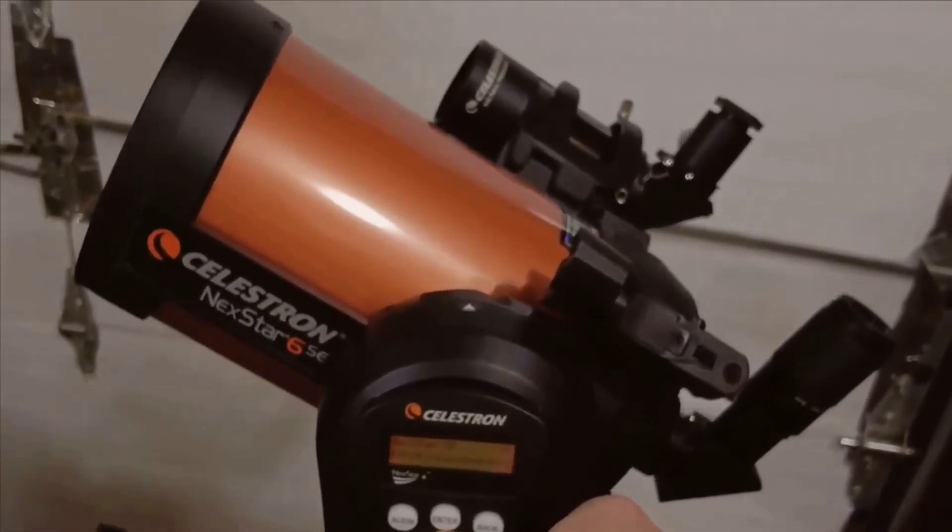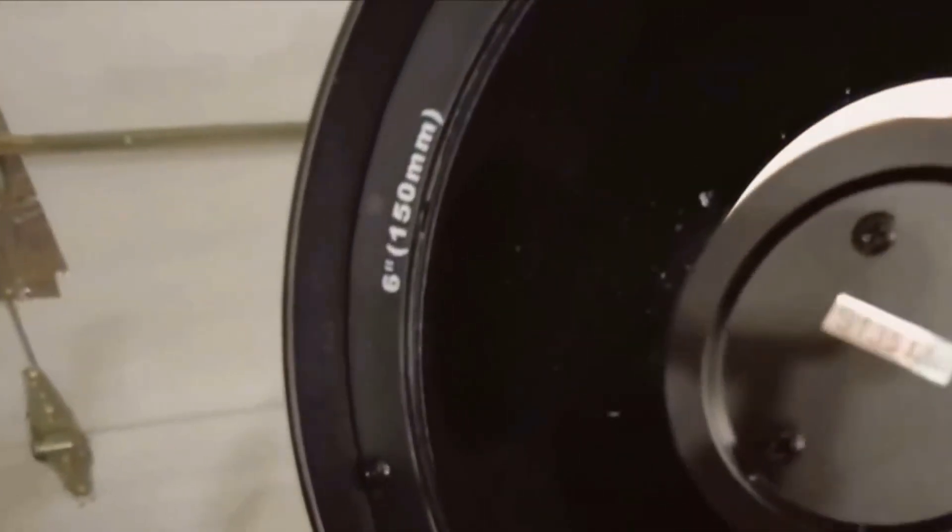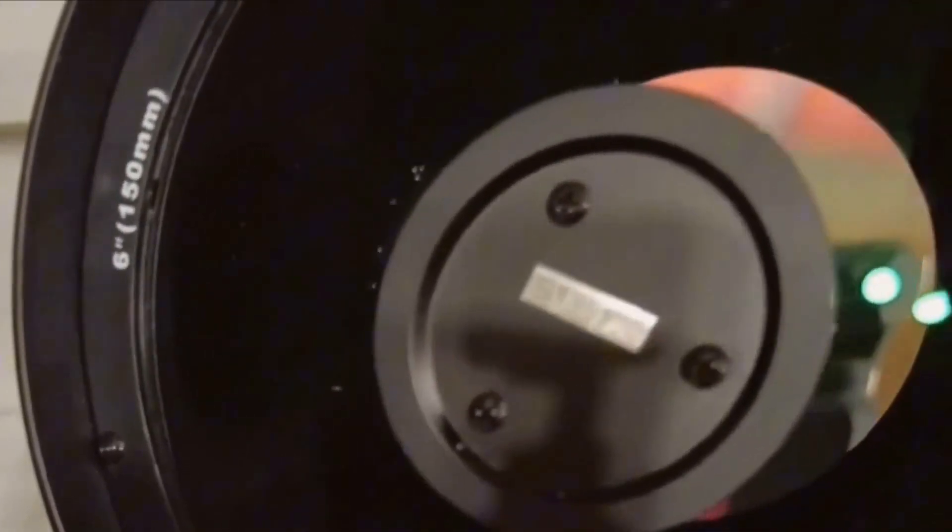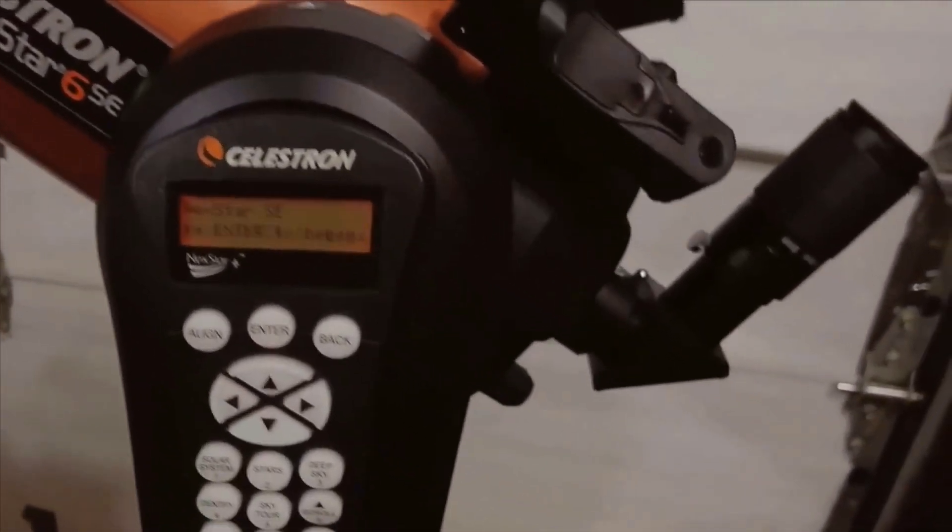In terms of build quality, the Nexstar 6SE feels robust and well-constructed. The materials used are of high quality, and the overall design is very ergonomic. The tripod is sturdy, providing a stable platform for your observations even when it's a little windy outside.